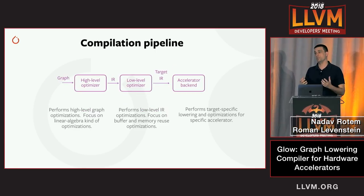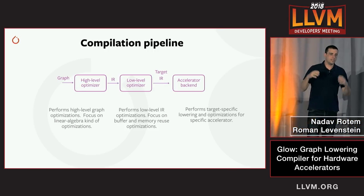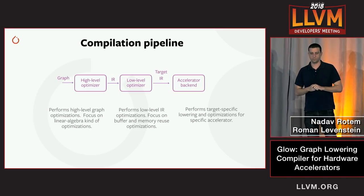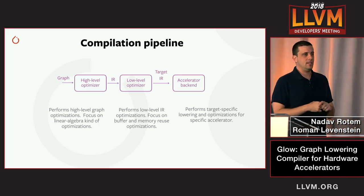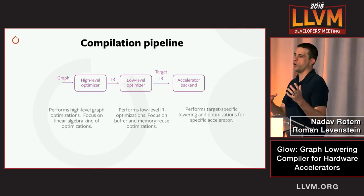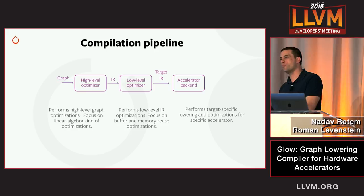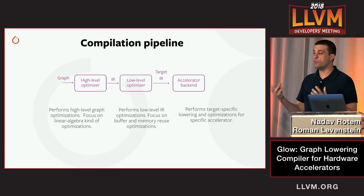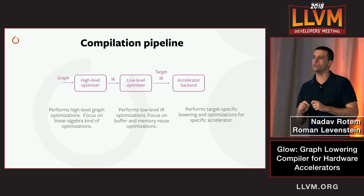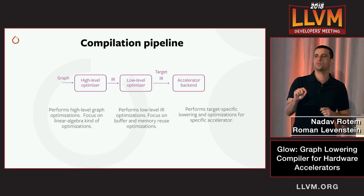The compilation pipeline starts with a high-level IR, which gives you the ability to perform mathematical, high-level, domain-specific optimizations. Next, we transform the graph into a low-level IR, which gives us the ability to perform low-level memory optimizations. Finally, we transition the graph into an optional accelerator-specific IR that you can tailor to the needs of specific accelerators, enabling very targeted specific optimizations.